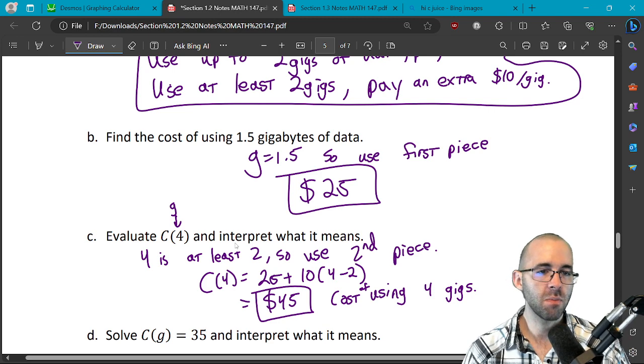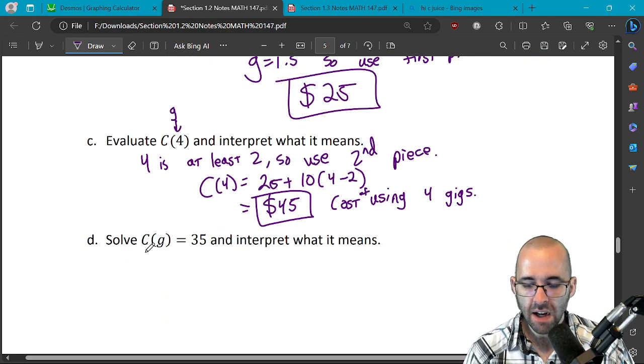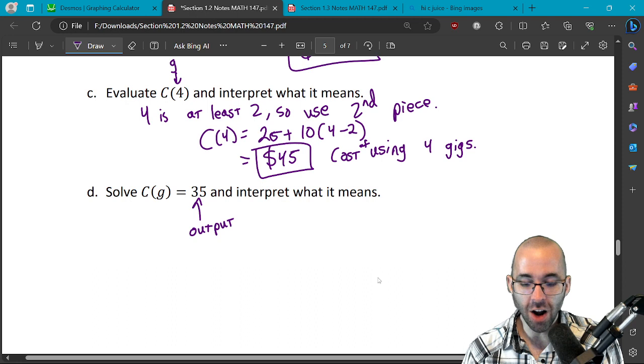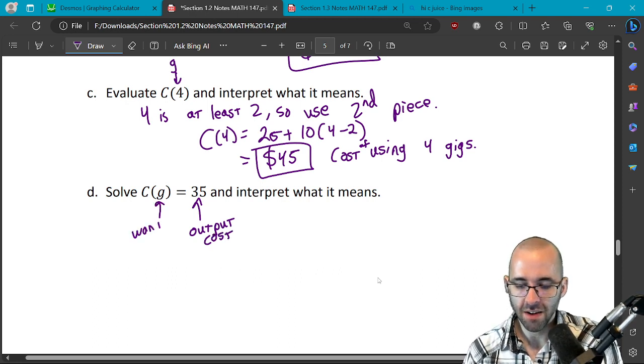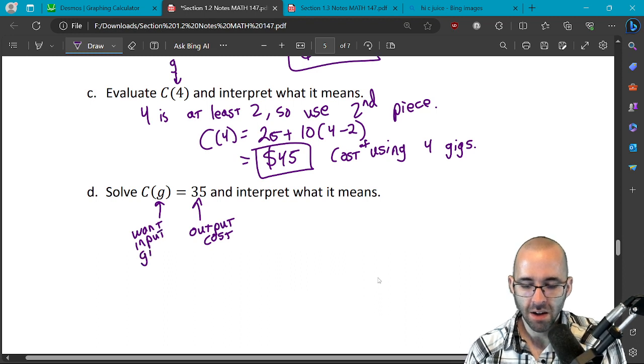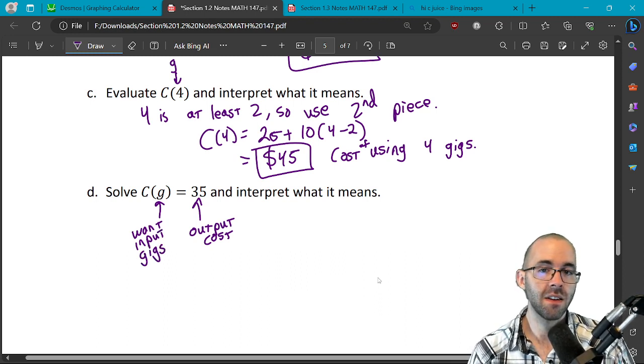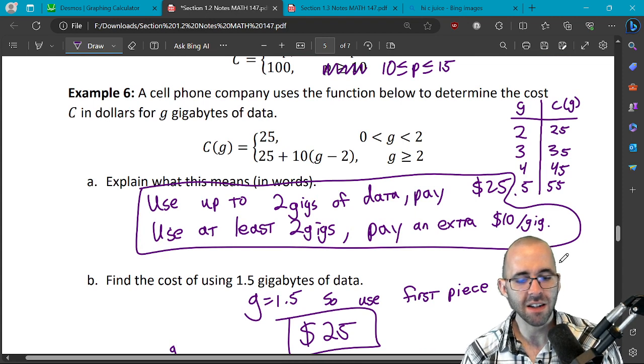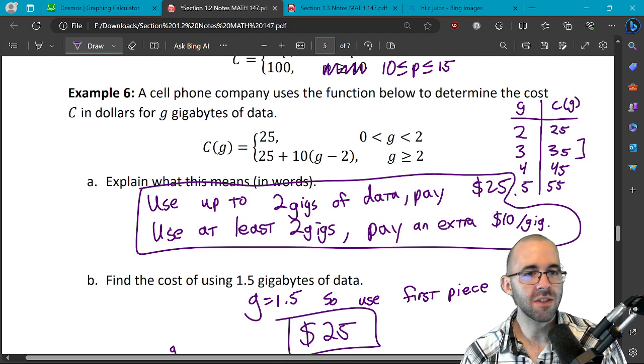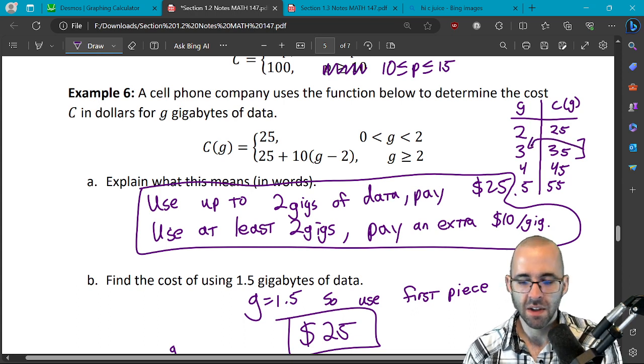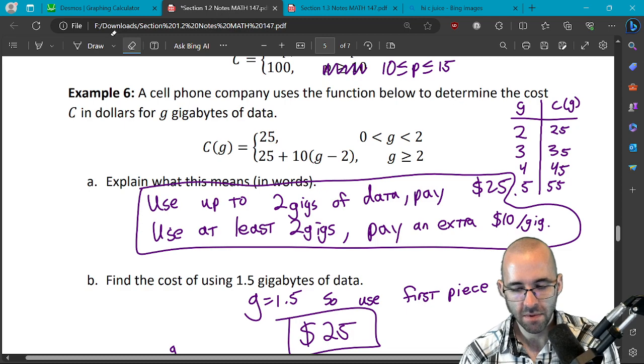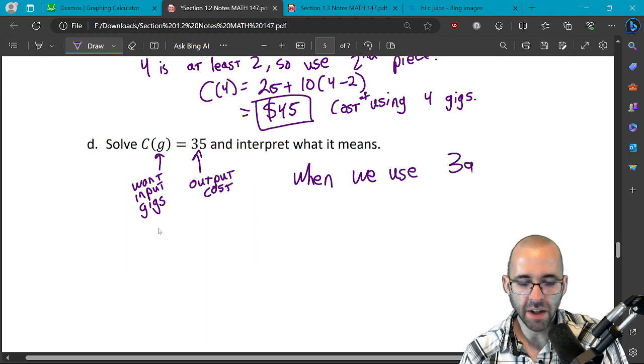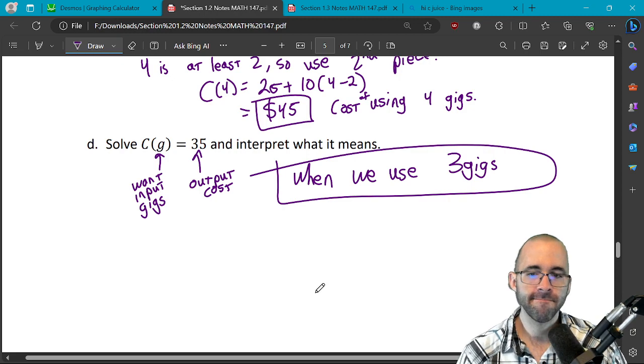There's more practice using functions and practice using these piecewise functions. Solve C of g is 35. So remember that's when we know the output, which is the cost here, and we want the input, which is the gigs of data that we're using. So how many gigs of data do we have to use for us to be charged $35? We actually already kind of answered that. Cost is 35 when the input is 3 gigs. So when we use 3 gigs of data, there we go.